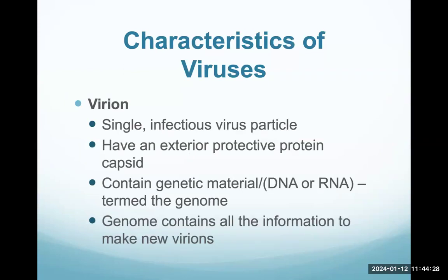What are some other characteristics of viruses? We refer to one virus particle as a virion — what I had drawn on the whiteboard would be called a virion. It is a single infectious virus particle. It has an exterior protective protein shell we call a capsid, and inside of that it contains genetic material that would either be in the form of DNA or RNA. We term this the genome — all the instructions for the virus are contained in that genetic material. The genome has all the instructions to make new virions.